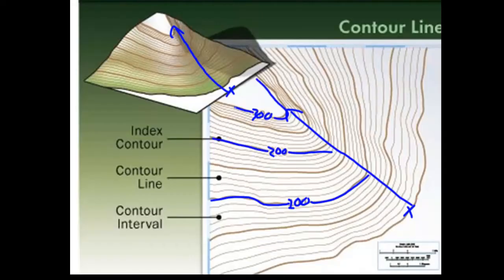If you count the number of lines between the index contours, you have 1, 2, 3, 4, 5, 1, 2, 3, 4, 5. Do a little math. 100 to 200 feet is 100 feet. 10 lines in between. You know the contour interval is 10 feet.